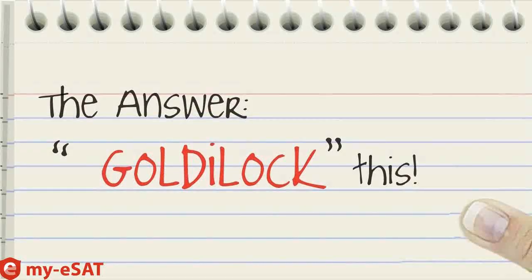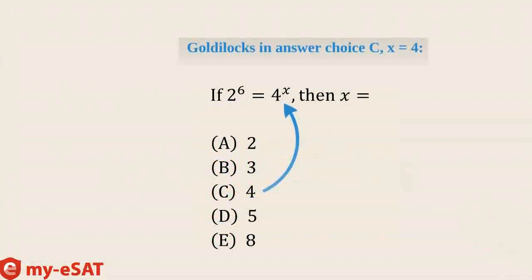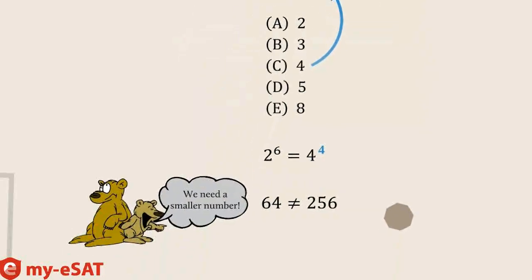Okay, time's up. Let's go over the answer together. Right away, let's Goldilocks answer choice C, x equals 4. This results in 256, which is much larger than 64. This tells us that we need a smaller number as x. Therefore, let's eliminate C as well as D and E.